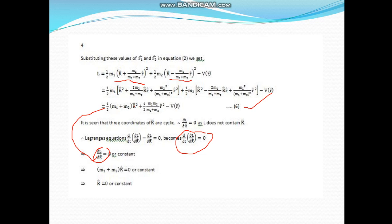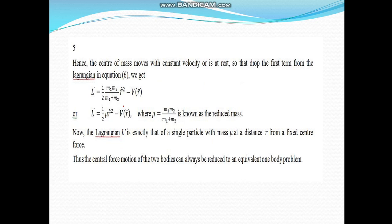It means del L by del R dot will be equal to 0 or maybe constant. Let us find del L by del R dot from here. It is half m1 plus m2 times twice R dot. The 2s cancel. The remaining terms contain no R dot. So the result is m1 plus m2 R dot equals 0 or constant. But m1 plus m2 is not 0. So R dot will be equal to 0 or constant.